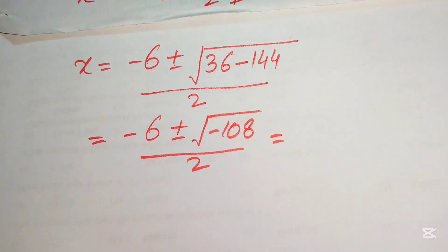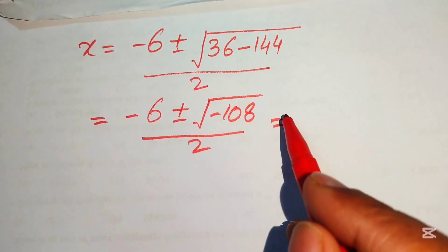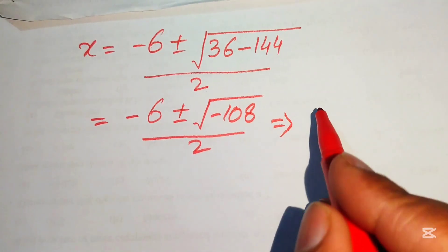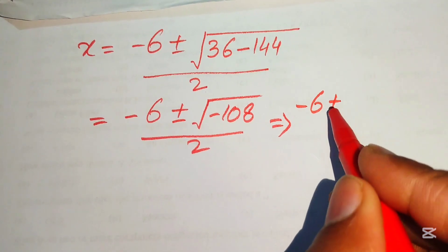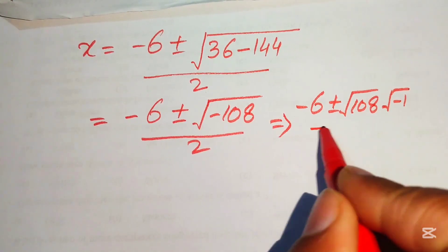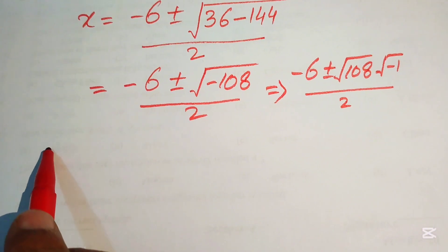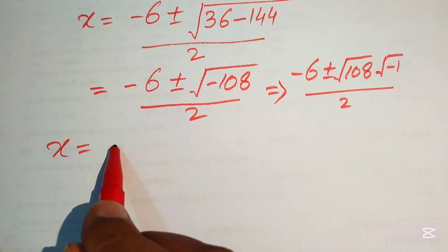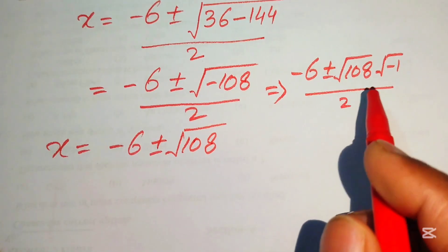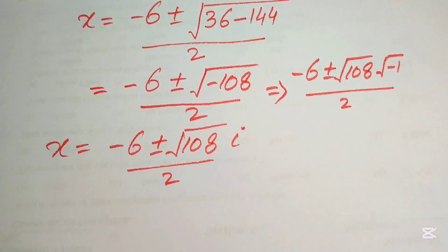We break the radical into a negative part and 108, writing it as negative 6 plus or minus the square root of 108 times the square root of negative 1, divided by 2. Since the square root of negative 1 equals i (iota), we have negative 6 plus or minus root 108 times i, divided by 2.